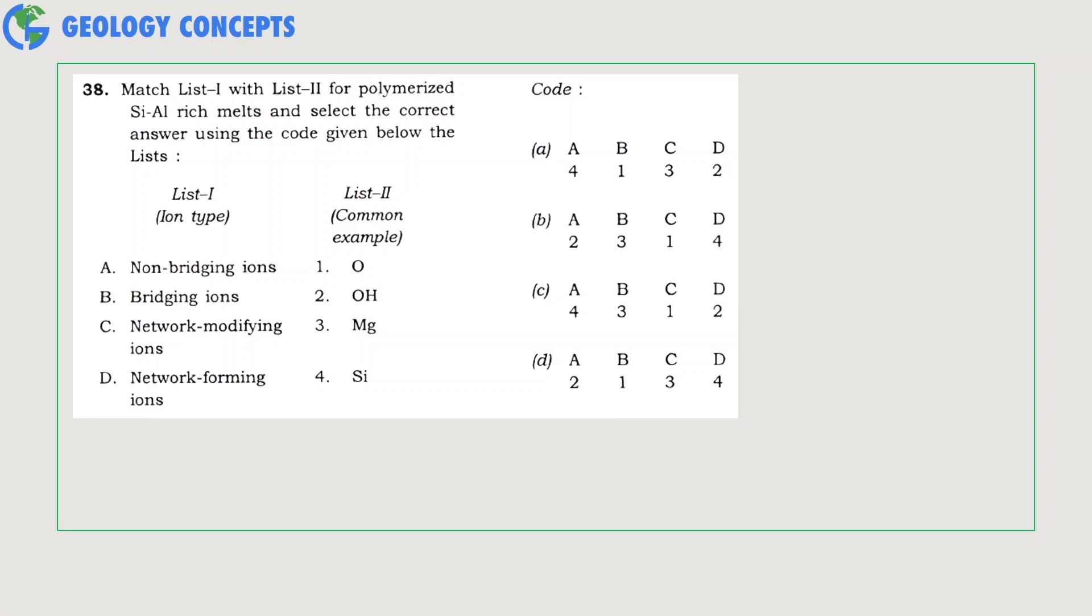The next question asks you to match the ions with their behavior during the polymerization process. Network formers are elements that tend to increase molecular linkage, thereby increasing the viscosity of the magma. For example, silicon, oxygen, and aluminum are network formers.